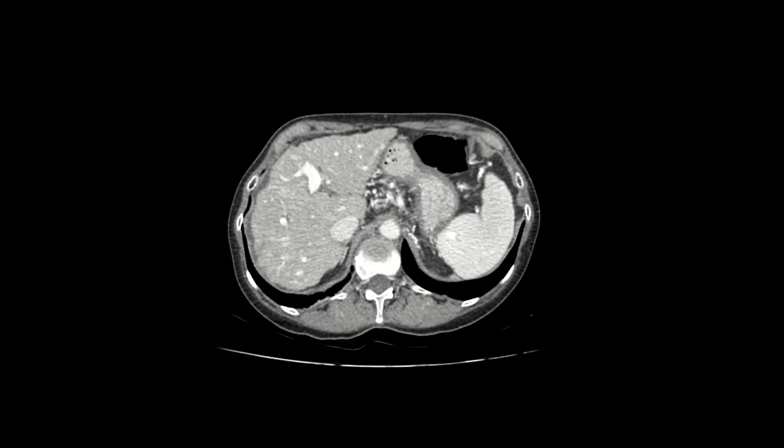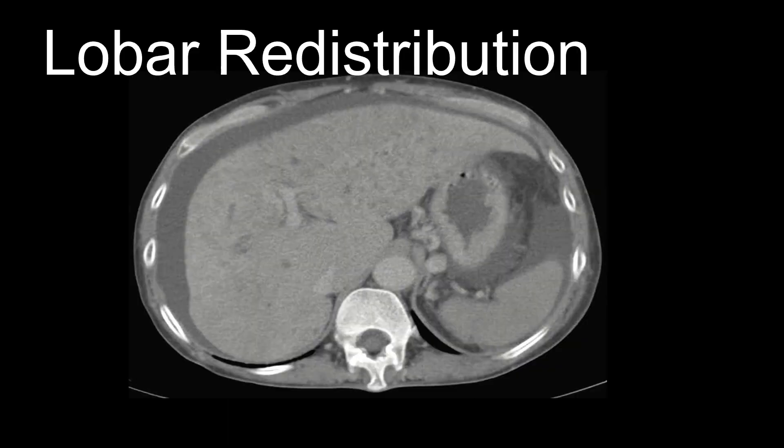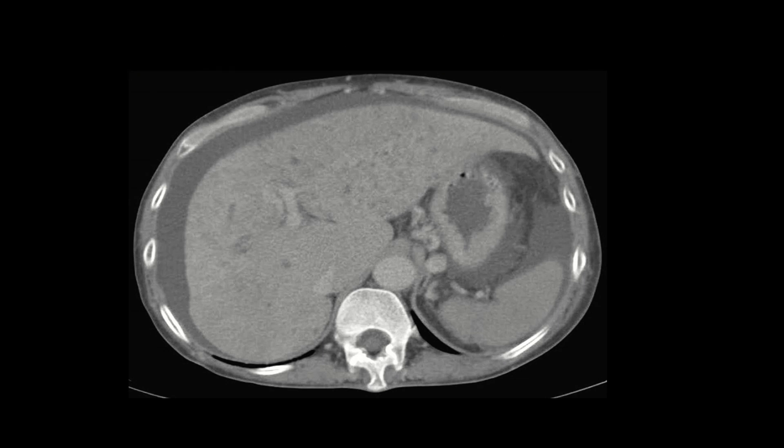Second, fibrosis leads to atrophy of liver tissue, or shrinking of liver tissue. So late in cirrhosis, sometimes the entire liver is diffusely atrophied or shrunken. But more importantly, earlier on in cirrhosis, certain areas of the liver can atrophy, and others are going to end up hypertrophying or growing to compensate. This leads to what we call lobar redistribution, and the pattern can depend somewhat on the cause of cirrhosis.